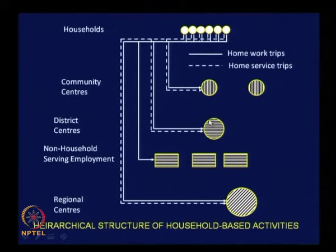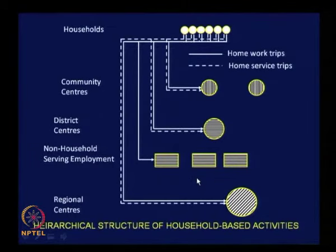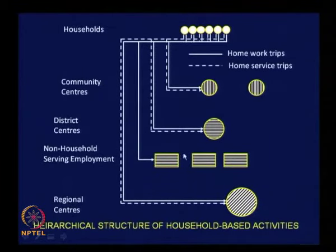We are talking about household-based activities because we have simplified the activity system to some extent, so that we can clearly understand at least 80 to 90 percent of the activity pattern. Based on that information, we will be able to plan for different types of land uses and ultimately get a structure for the urban area. Household-based trips have a regular pattern and must be provided the required facilities — once you provide this, you would have automatically provided for other kinds of movements as well.